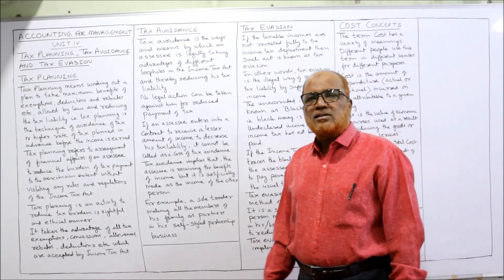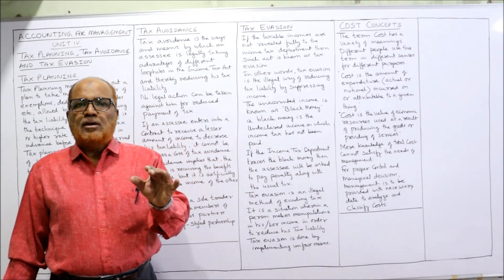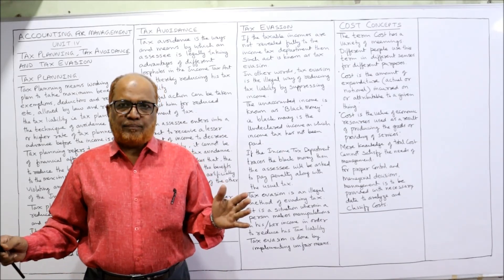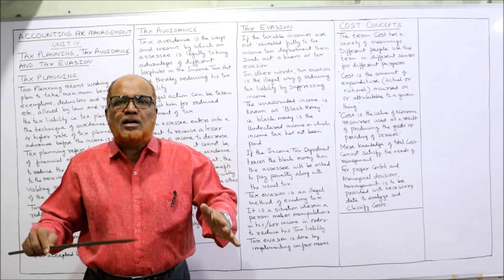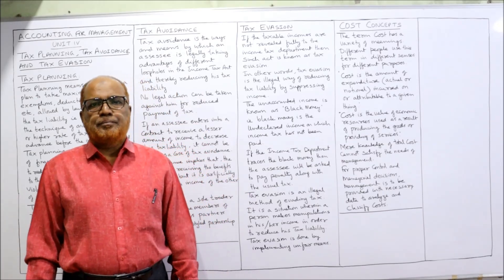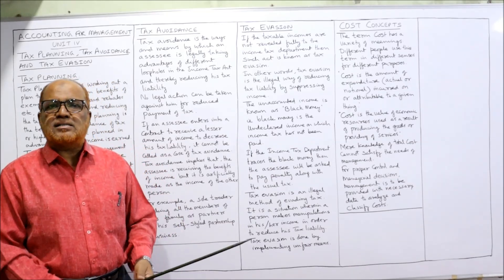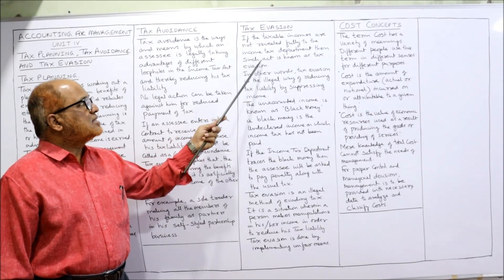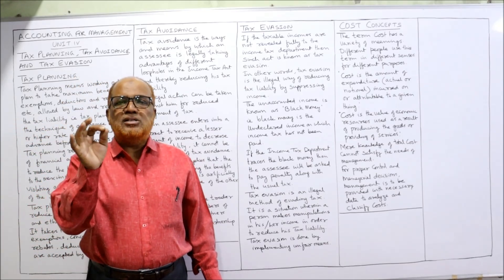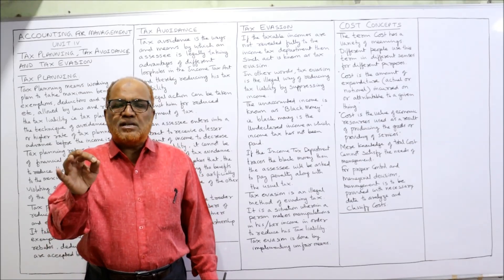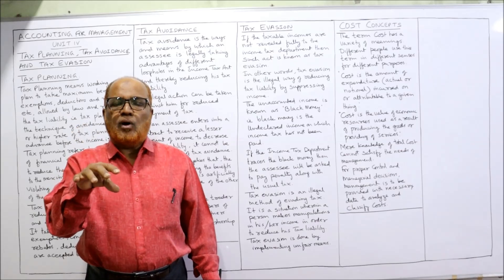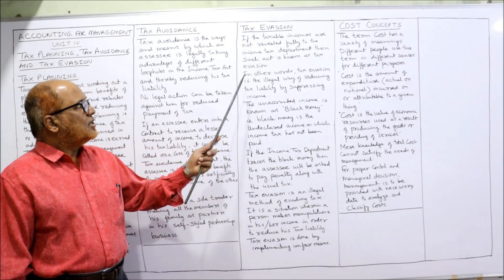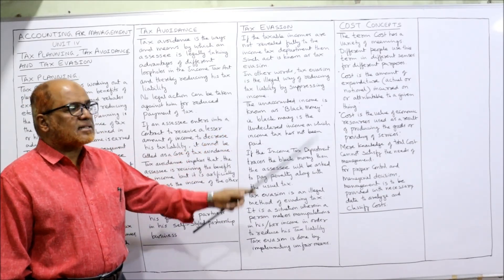The last concept is tax evasion. Tax evasion means not showing the income to the Income Tax Department in order to avoid tax liability — that is, unaccounted money. A person has not shown clearly how much income they have earned; they have suppressed their income. This is called tax evasion and it is illegal. If taxable incomes are not revealed fully to the Income Tax Department, such an act is known as tax evasion. In other words, tax evasion is an illegal way of reducing tax liability by suppressing or concealing the income.